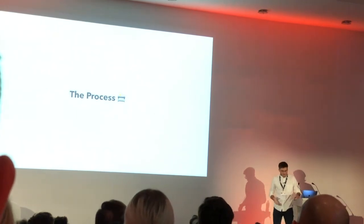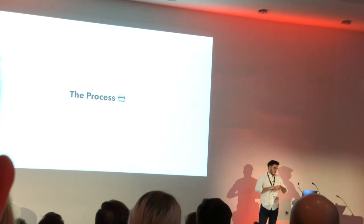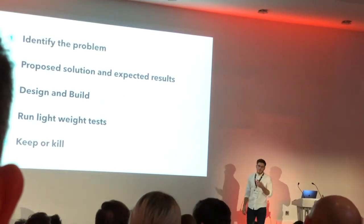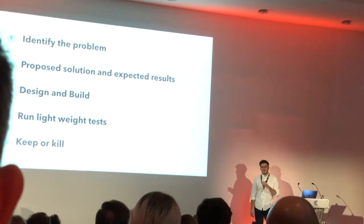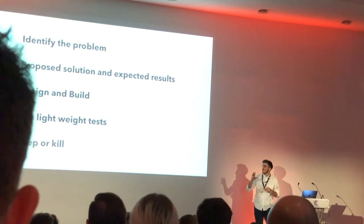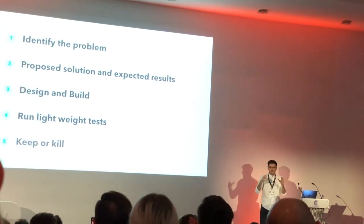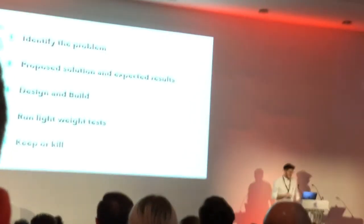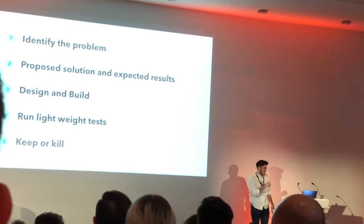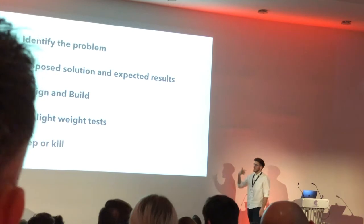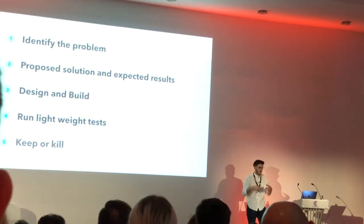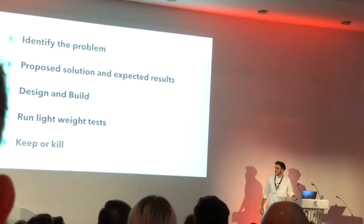I'm going to walk you through an example of a product feature we applied this framework to. I've shrunk it down to five steps — what I call the process. First, identify the problem. Second, propose a solution and the expected metrics — we get the whole product team in a room, look at our behavioral funnel, and decide where it's going to move the metrics. Third, design and build — from conception through to engineering implementation. Then we run lightweight tests and finally decide to keep or kill the feature. Even if something only moves the metric by 1%, we deem it a fail. We don't want to bloat our product, especially as we're still new.